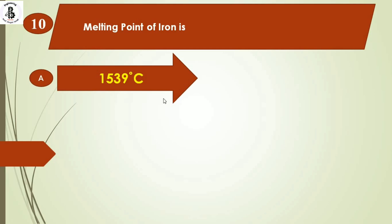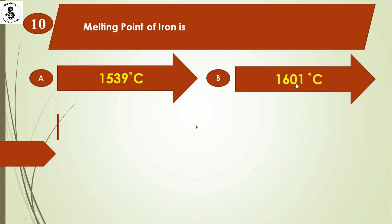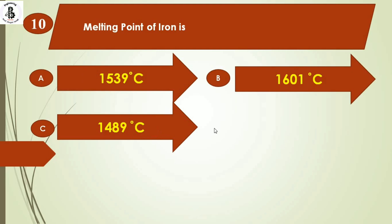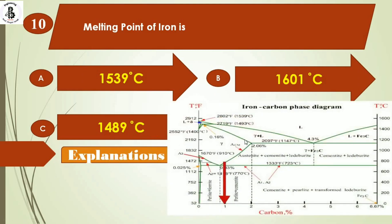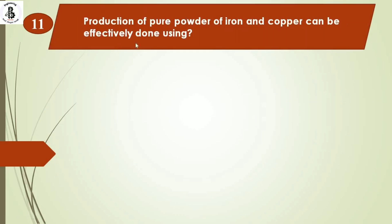The next question: the melting point of iron is option A) 1539°C, option B) 1601°C, option C) 1489°C, option D) 1131°C. From the iron-carbon diagram, 100% iron has a melting point of around 1539°C, which is the highest temperature range on the phase diagram. The right answer is option A, 1539°C.